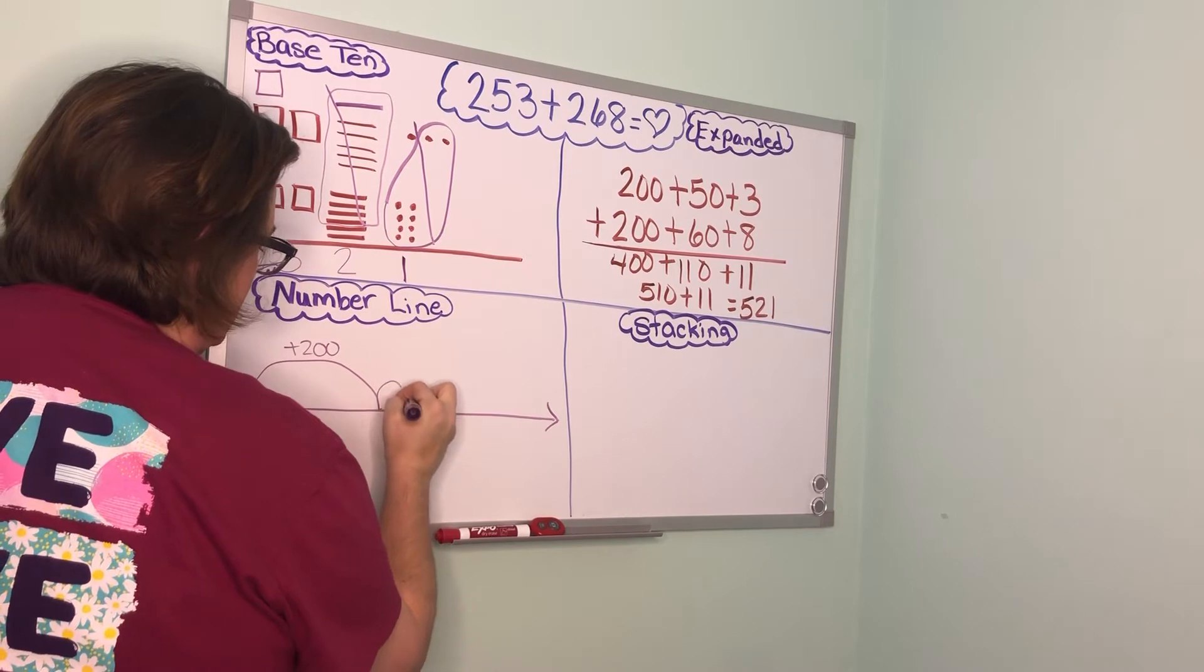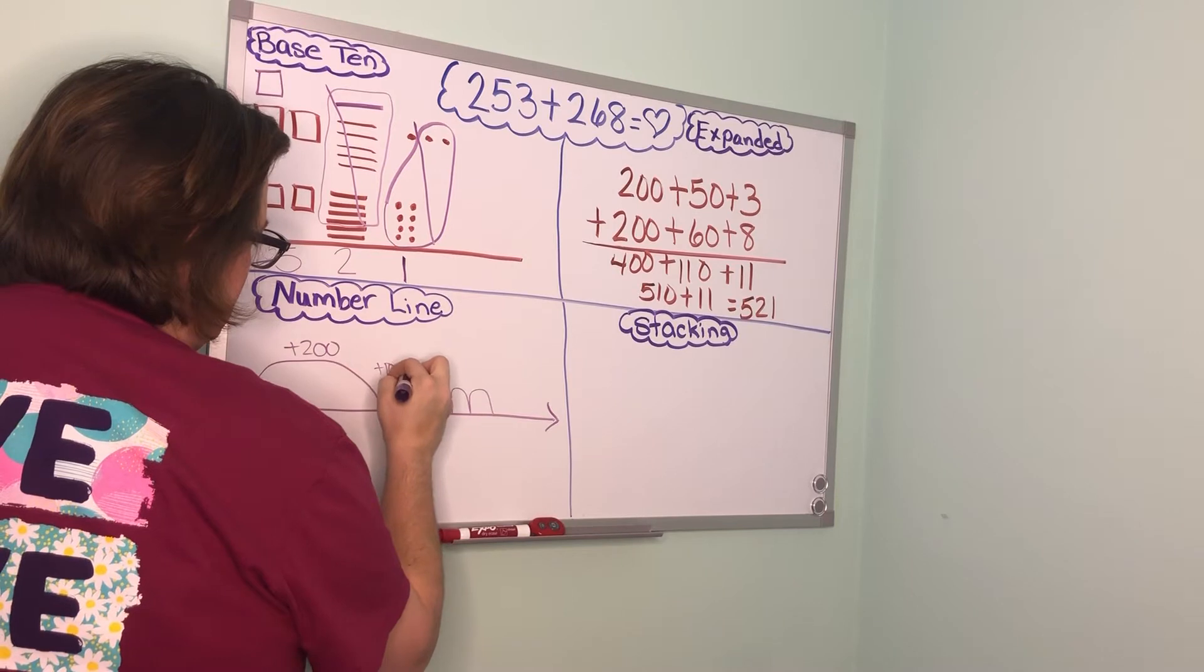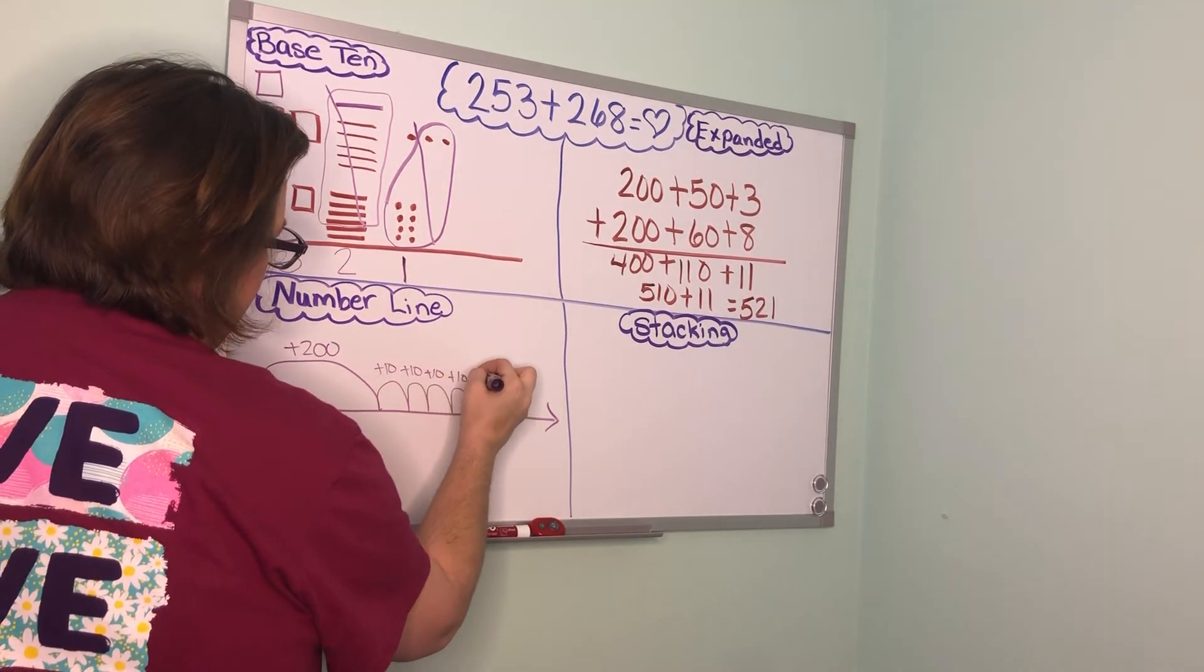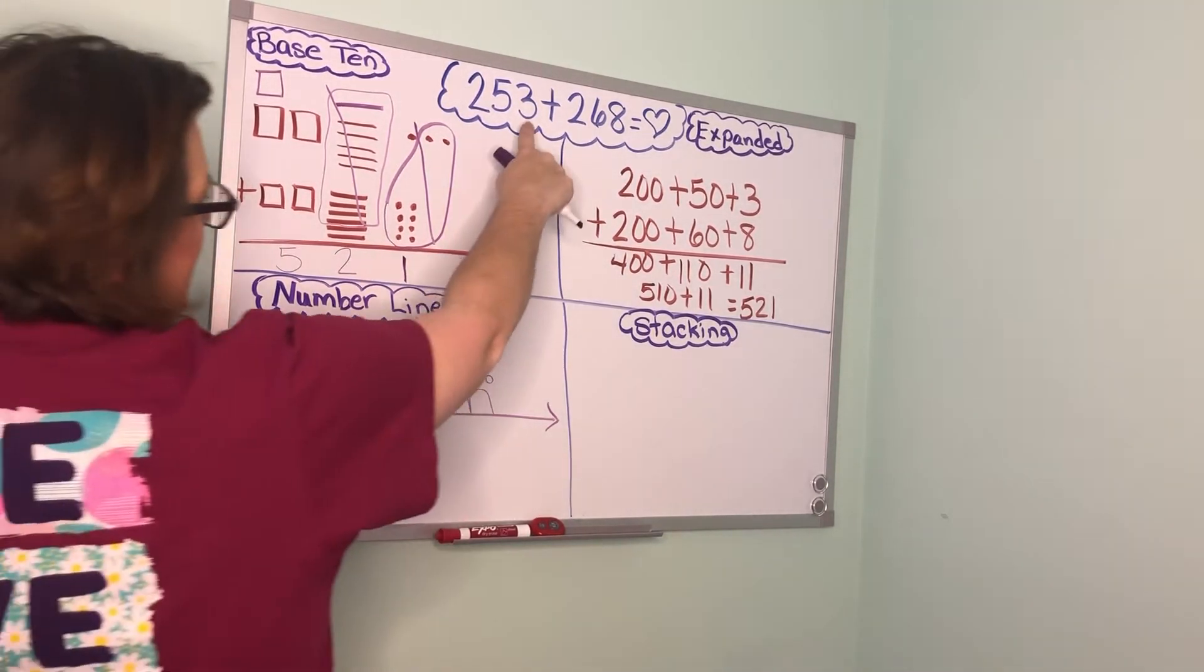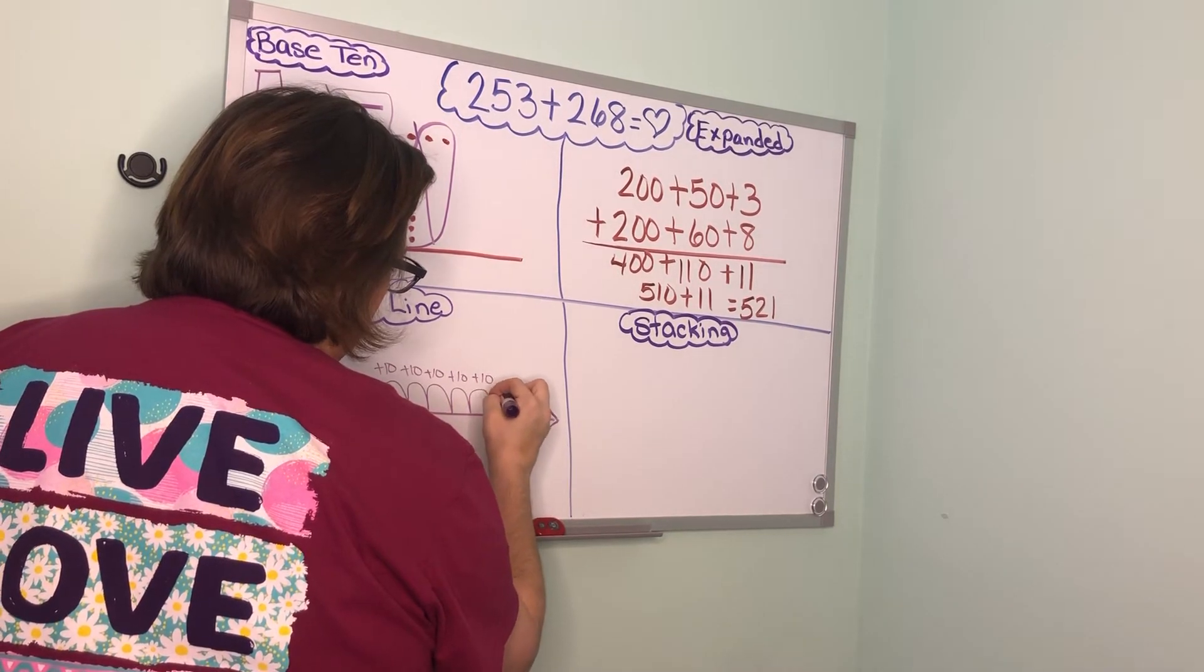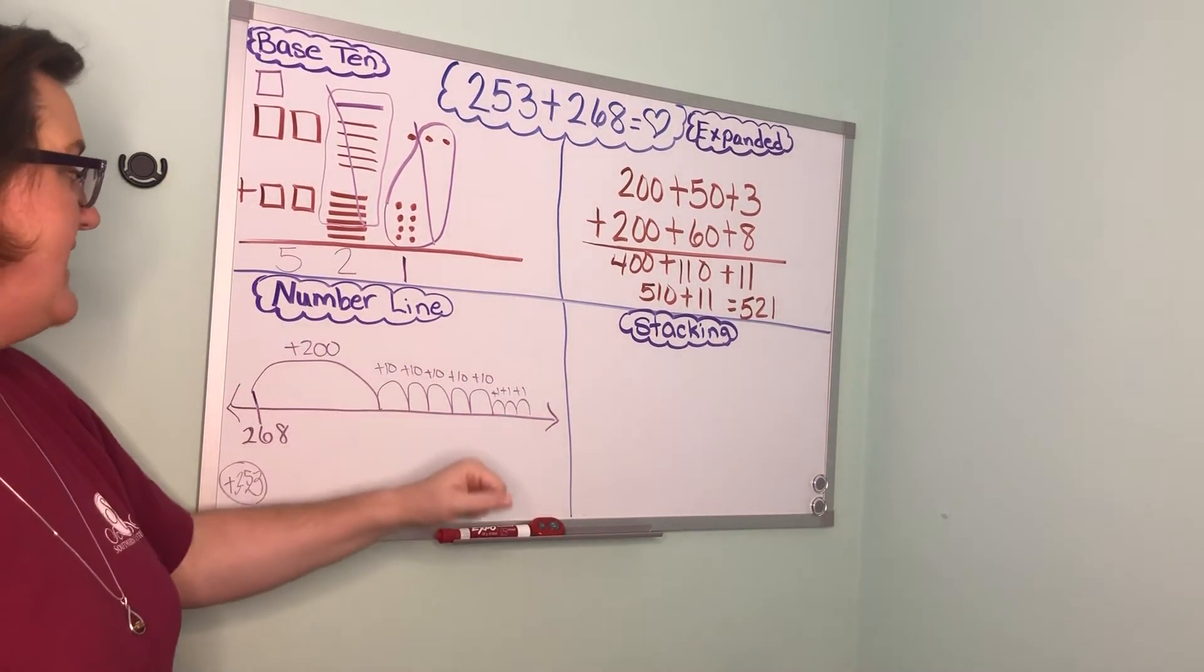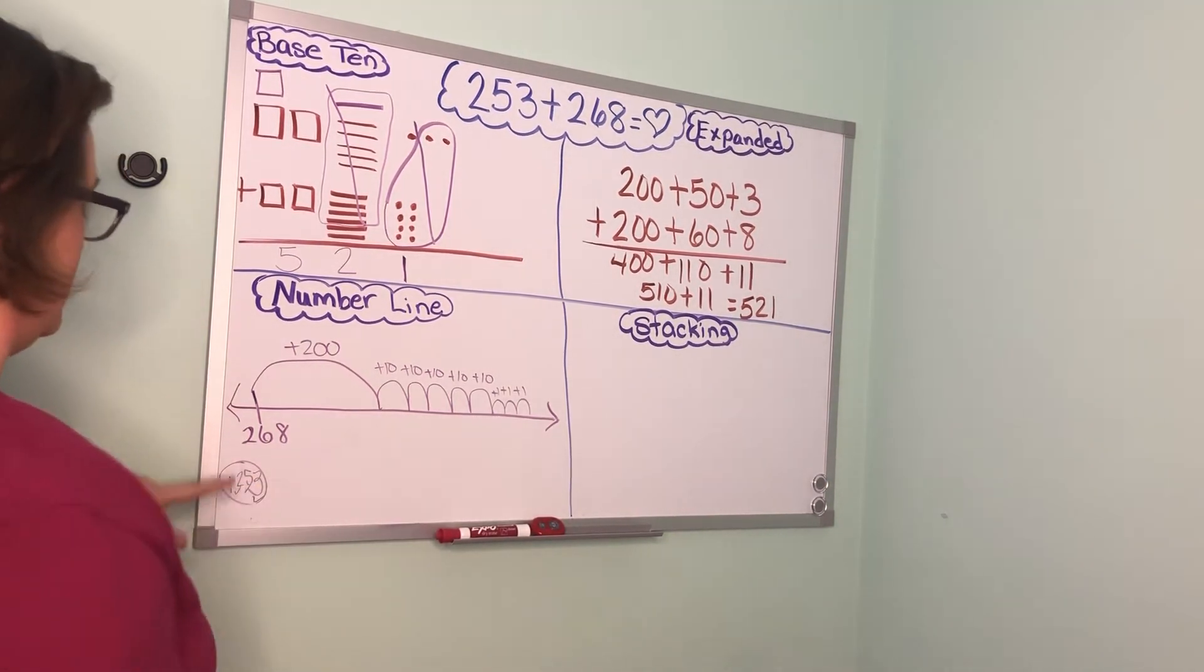Now I'm ready to jump and hop 5 tens. So there's 10, 20, 30, 40, 50 and each one of these needs to have a plus 10 above it. So I can put a check there and then I have three singles left that I need to hop. So it's one two three and each of those get a plus one. All right so remember before I stop or before I start to actually do my math I want to make sure that I actually hopped 253.